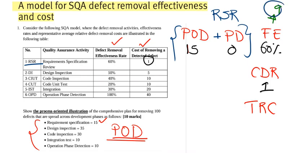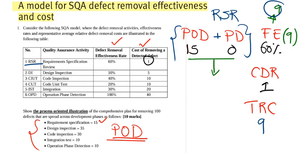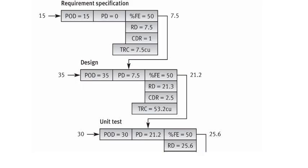We removed 9 defects and the cost of removing each defect is 1, so the total removal cost is 9 times 1, which equals 9. The filter effectiveness gave us 9 removed defects out of a total of 15. Subtracting: 15 minus 9 equals 6, which will be the past defects carried into the next phase.